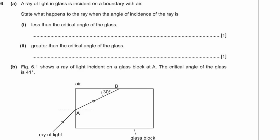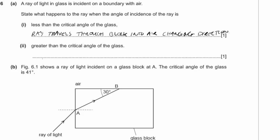Question six: a ray of light is incident on a glass-air boundary. If the angle of incidence is less than the critical angle, the ray travels out of the glass into the air and changes direction as it does so. If the angle of incidence is greater than the critical angle, you get total internal reflection — 100% of the ray is reflected back into the glass block.